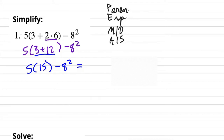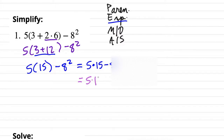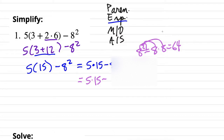Now I want to rewrite this. This 5 in front of the 15 is like 5 times 15, so we're going to put a dot there — not the decimal dot, but the midpoint dot showing multiplication — and then minus 8 squared. Using PEMDAS, the next thing we do is not multiplication but exponents. So the next thing we'll have is 5 times 15 minus 8 squared, and 8 squared is 8 times 8, which is 64.